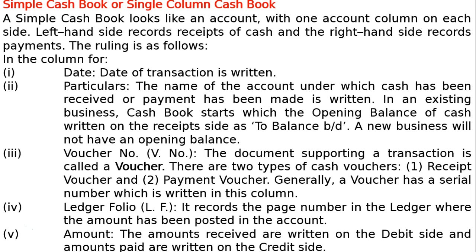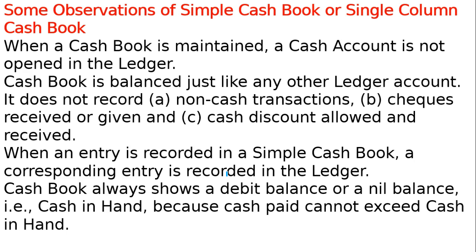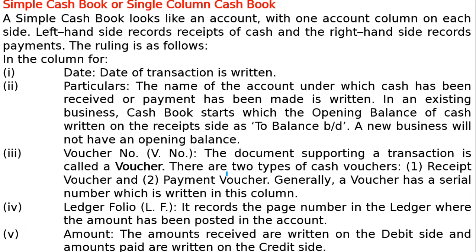Cash book is one column — it is a single column cash book. A simple cash book looks just like a ledger account, with one amount column on each side. The left hand side records the receipt of cash and the right hand side records payments of cash.